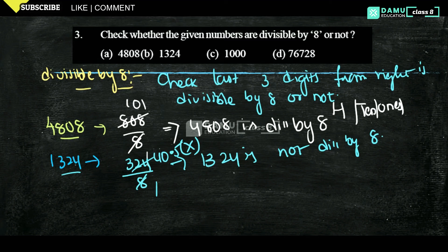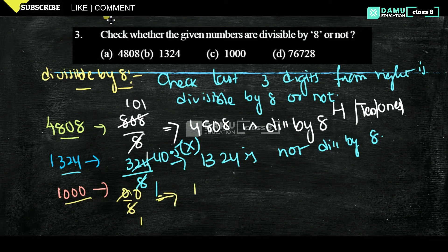The next one is 1000. What are the last three digits? 0, 0, 0. So 000 divided by 8 — 8 zeros are 0, so we get 0. That means 1000 is divisible by 8.